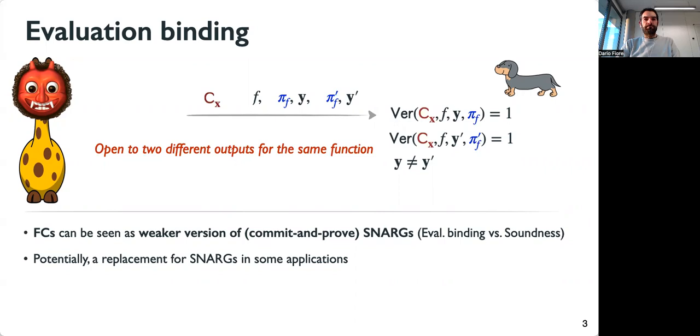Functional commitments, if you look at the functionality, are like a weaker version of commit-and-prove SNARKs, in which the strong notion of soundness in SNARKs about producing one single proof for a false statement is replaced with evaluation binding, where the adversary should produce two proofs for disagreeing statements.